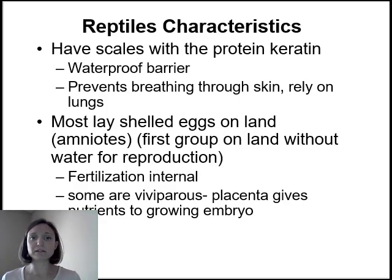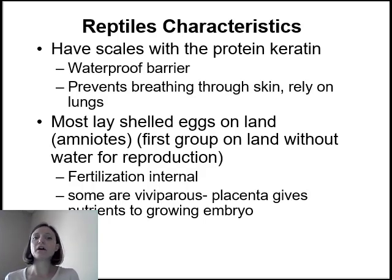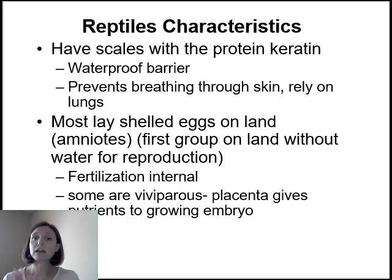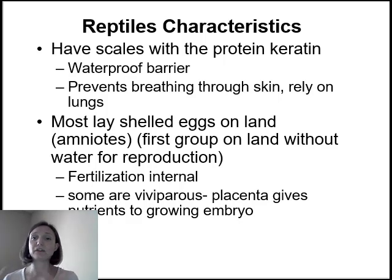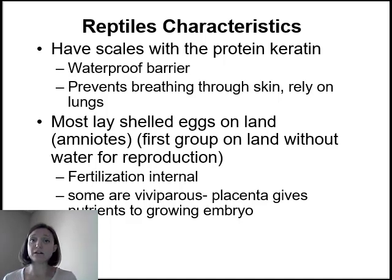Let's talk about some key characteristics of reptiles. Reptiles are amniotes, vertebrates, and tetrapods. One of their key adaptations is that they now have scales — we don't see scales on amphibians. These scales are made of keratin, the same protein that's in your fingernails or hair. It serves as a waterproof barrier so they won't desiccate in dry environments. But again, that prevents them from breathing or gas exchanging through their skin, so they now have to rely on their lungs, which the muscular rib cage allows them to do.